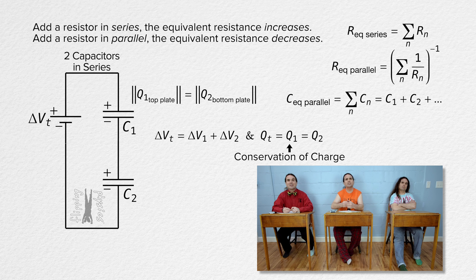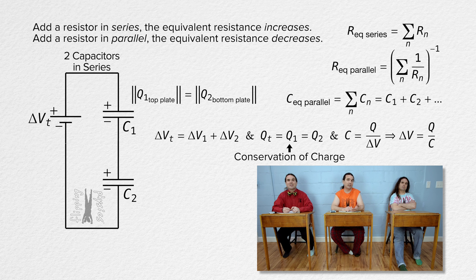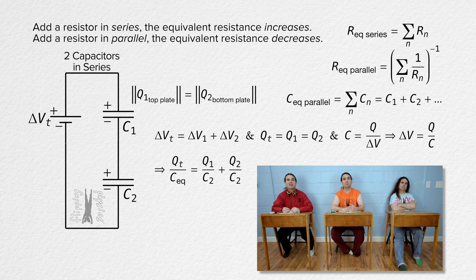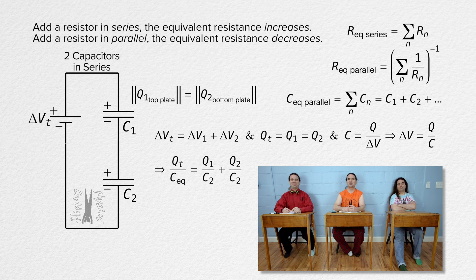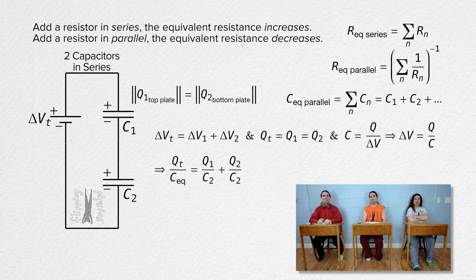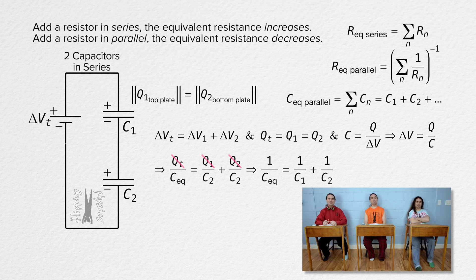Using the equation for capacitance, we can show the electric potential difference across a capacitor equals the magnitude of the charge on one of the plates of a capacitor over the capacitance of the capacitor. We can substitute that into our electric potential difference equation. All the charges are the same, so everybody brought charge to the party!